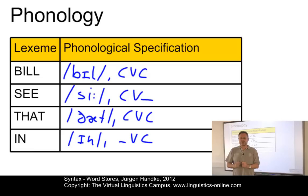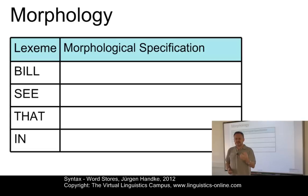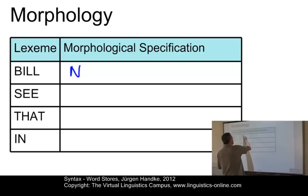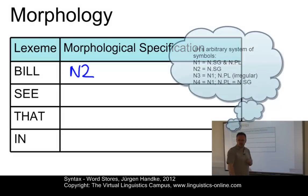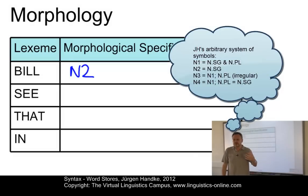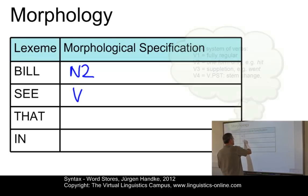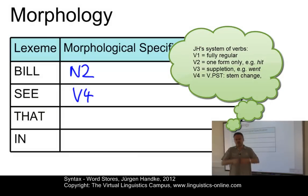Let's now look at the morphological information associated with our lexemes. The morphological specification defines the lexical category — that is, the word class associated with each lexeme. We need a little bit more information than just that 'bill' is a noun. We need a special noun class — let's call it Noun Class 2 — an arbitrary symbol which indicates that, under normal circumstances, 'bill' does not involve a plural. Likewise, we have to represent that 'C' is a verb, using a symbol — let's call it V4. Again, this is fully arbitrary; we could call it V12345, depending on our internal classification.